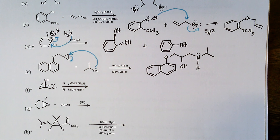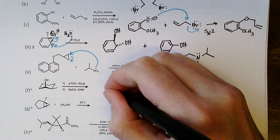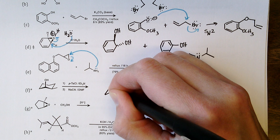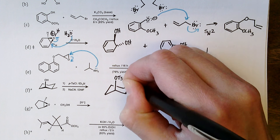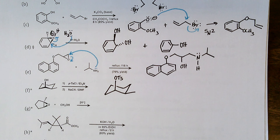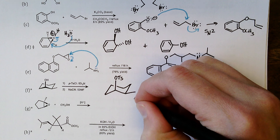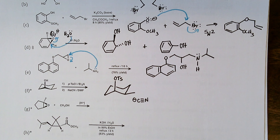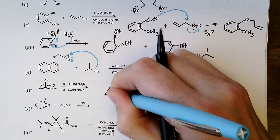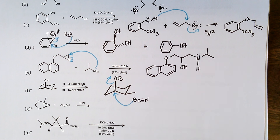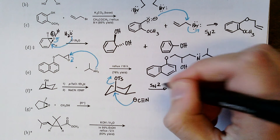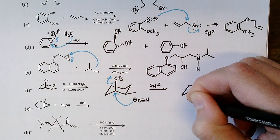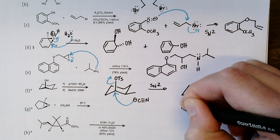Part f (stereochemistry required): the secondary alcohol is converted into a sulfonate ester using para-toluenesulfonyl chloride, giving the tosylate. The point is to convert the hydroxyl group into a fantastic leaving group. In the second step, cyanide ion acts as a good nucleophile, approaching anti to the tosylate leaving group in an SN2 fashion — displacing the tosylate with inversion of stereochemistry to give the nitrile.